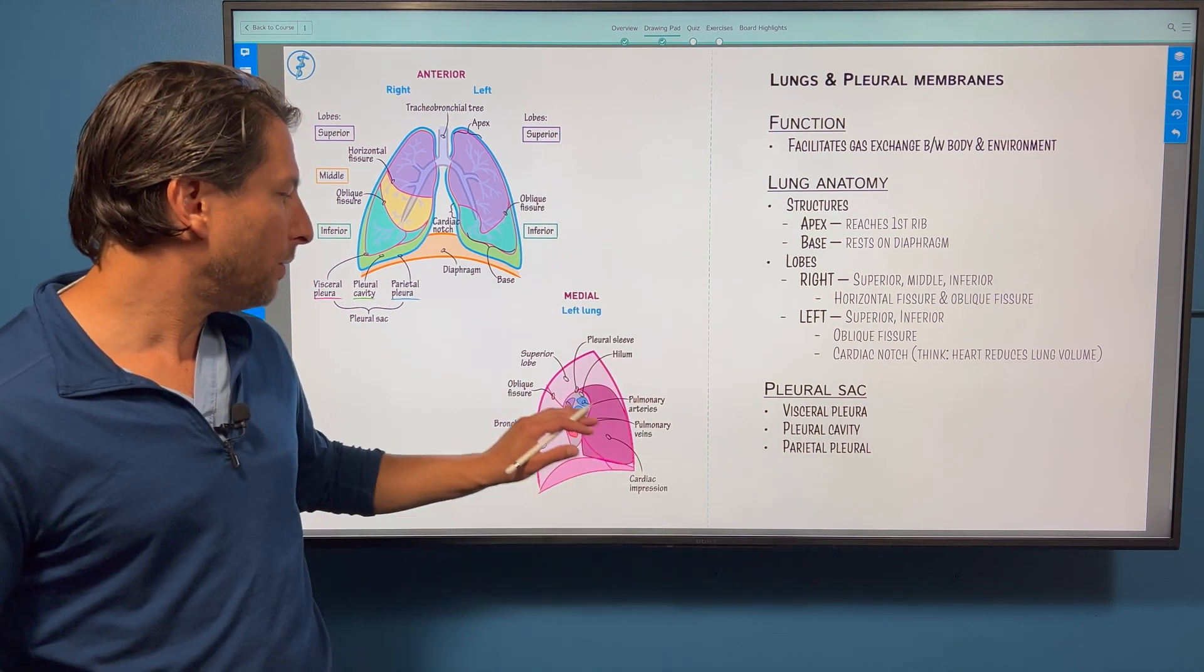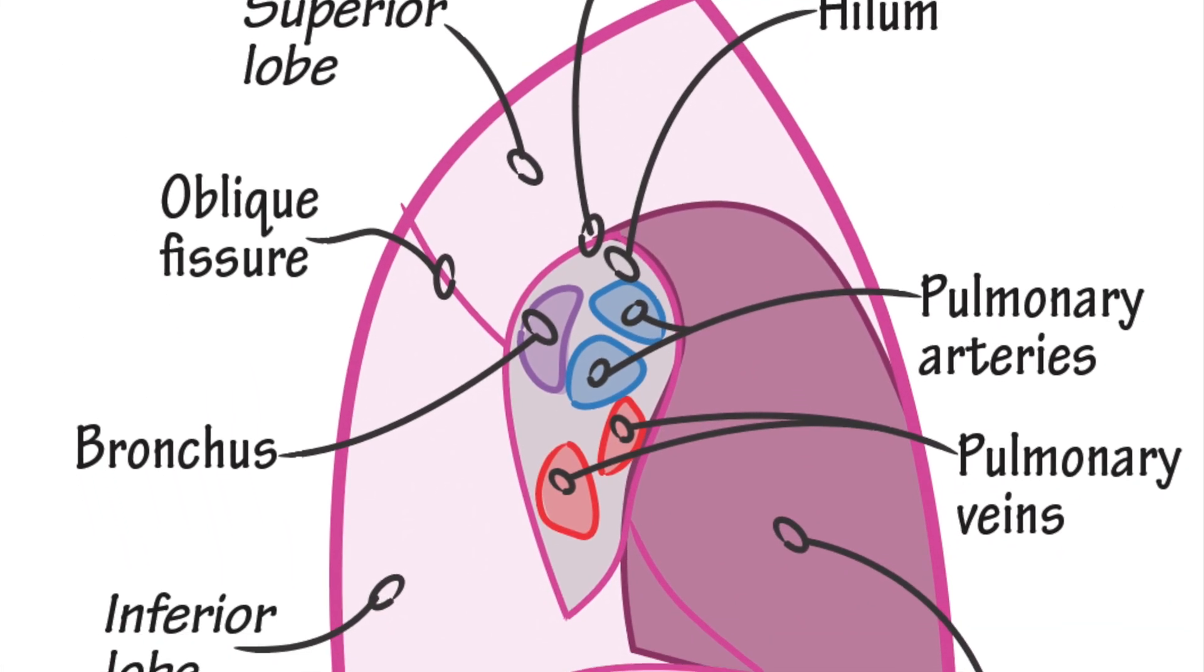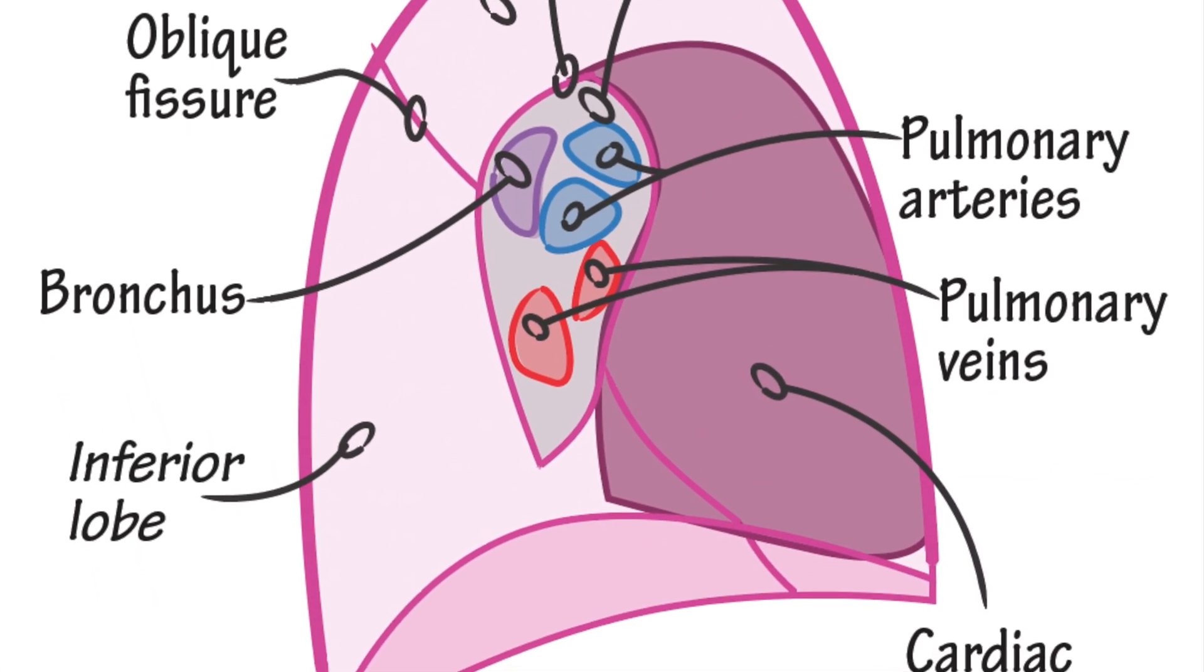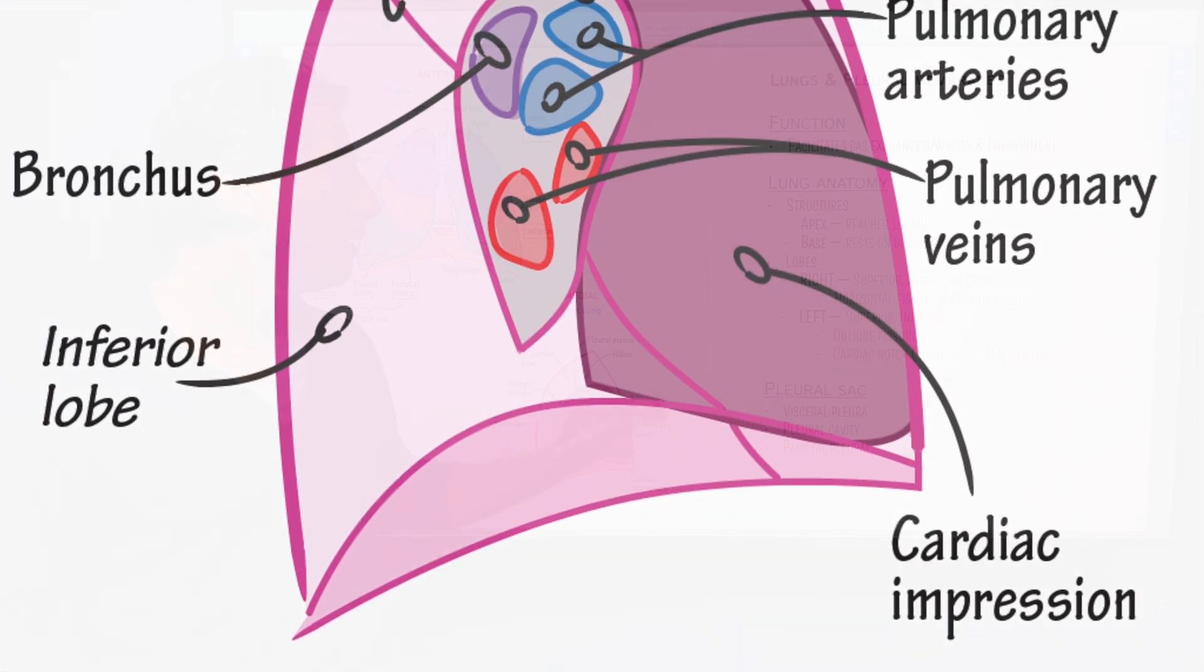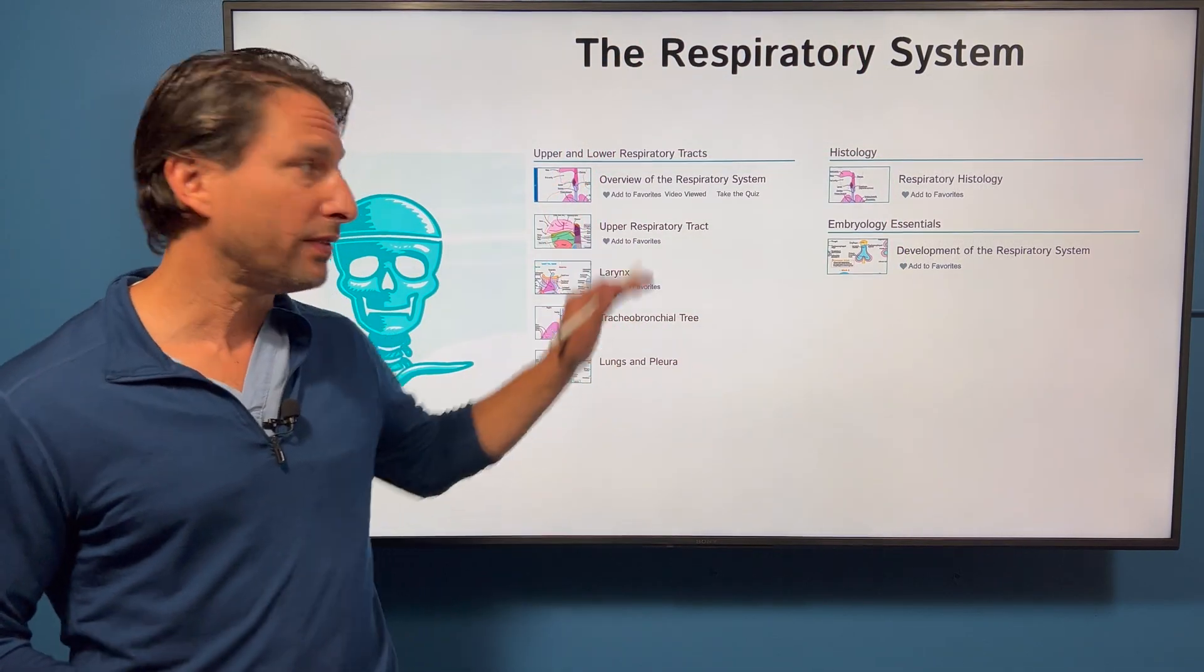Finally sagittal view, some of this arterial vasculature, the oblique fissure here. And then we point out the cardiac impression. That concludes our primer on the respiratory system. Not a ton of information there, but some really key anatomy for understanding clinical medicine.